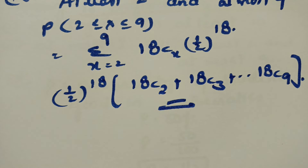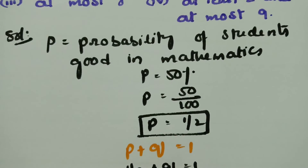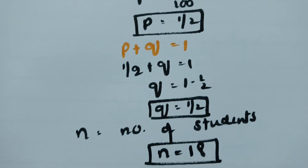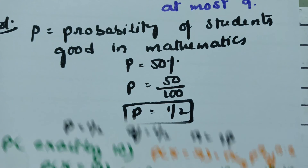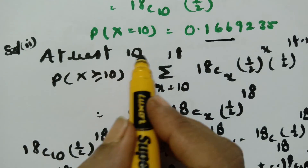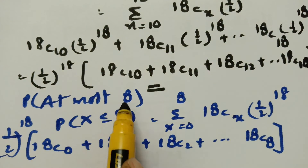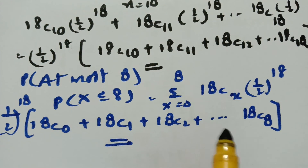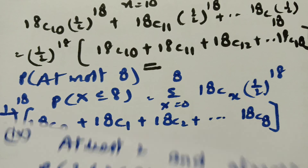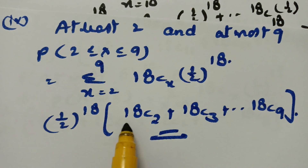Thank you for watching and staying till the end. This is quite simple if you follow these steps. First, find the values of P and Q, and N is given as 18 from the question. Then find: exactly 10, at least 10 (minimum 10, maximum 18), at most 8 (0 till 8), and at least 2 and at most 9 (add from 2 till 9).